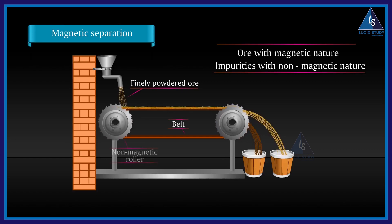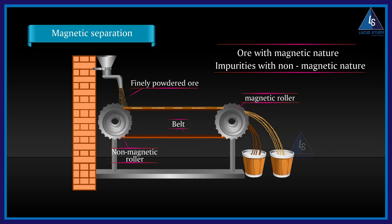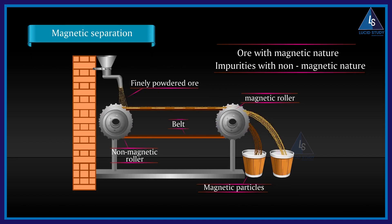When the ore moves from here to there, all the magnetic particles, that is the ore particles which are magnetic in nature, will be attracted towards this magnet and form a heap here. Those which are non-magnetic in nature will fall down, forming two separate heaps.